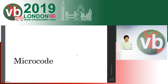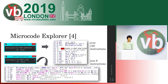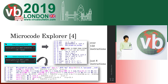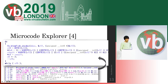Before explaining the modifications, I'd like to cover the basics of IDA microcode. IDA microcode is an intermediate representation used by the IDA Pro decompiler. It is optimized in maturity levels from low to high. We can check microcode by using Microcode Explorer. In low maturity level, the plugin makes over 100 microcode instructions and the code looks like assembly. In high maturity levels, it makes just eight instructions and the code is similar to a high-level language, close to the decompilation result.